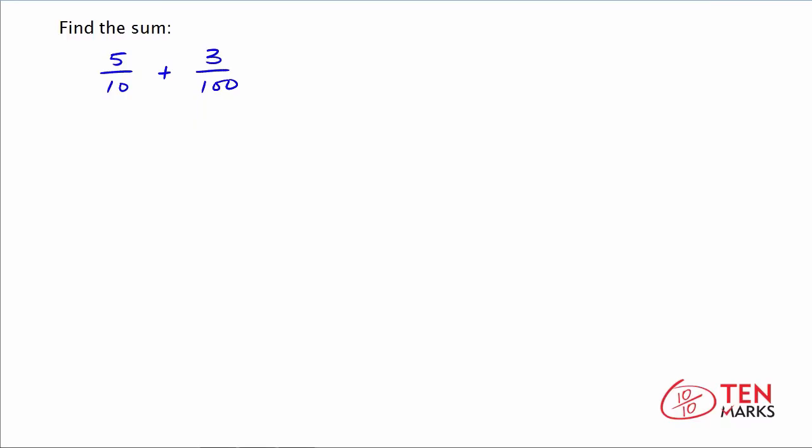To do this, we need to write 5 tenths as an equivalent fraction with a denominator of 100. And as you saw in the first problem, what we need to do is first visualize 5 tenths in a tenths grid, and then take a look at what 5 tenths looks like when represented in a hundredths grid.